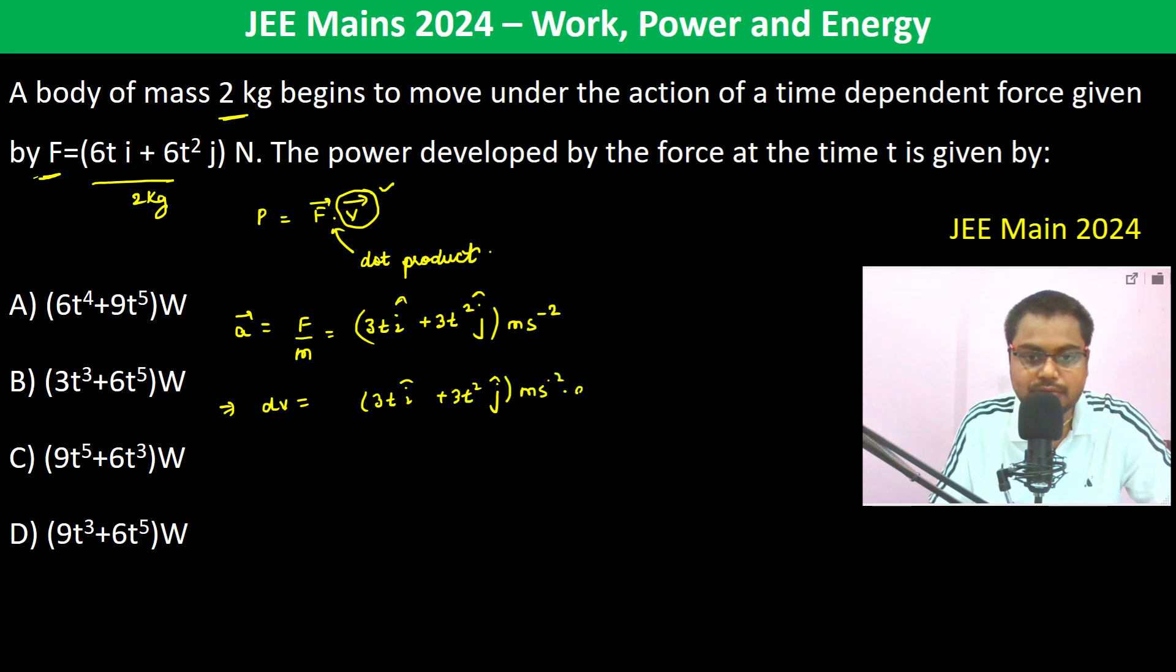Now we can see here that time T equals 0 to time T. It begins to move at time T equal to 0, so therefore initial velocity is 0 and final velocity is V. So therefore V is going to be 3T square by 2, 0 to T.